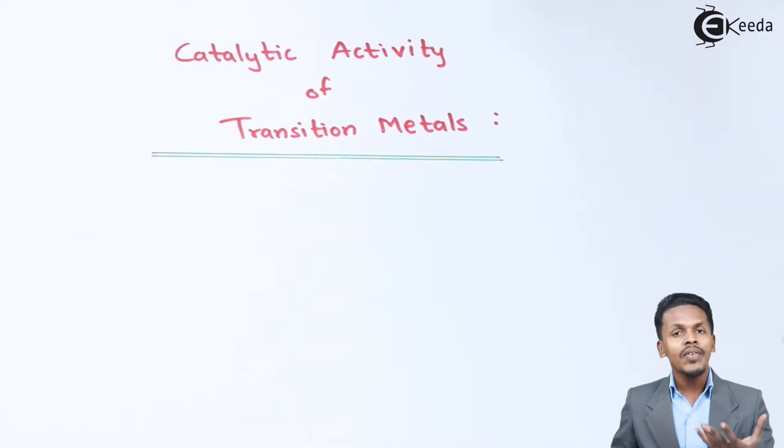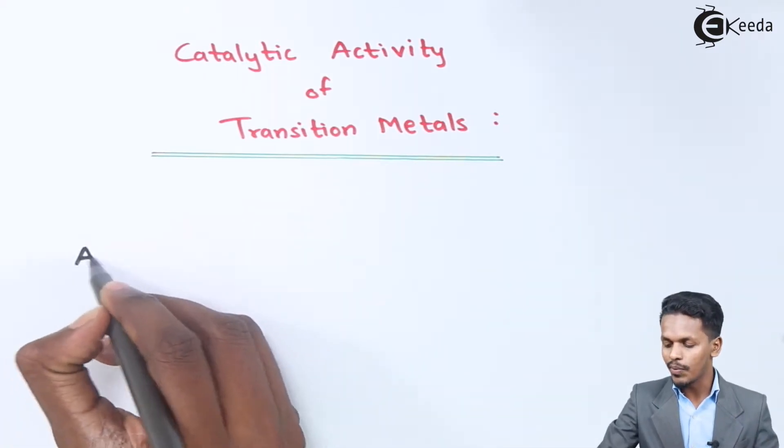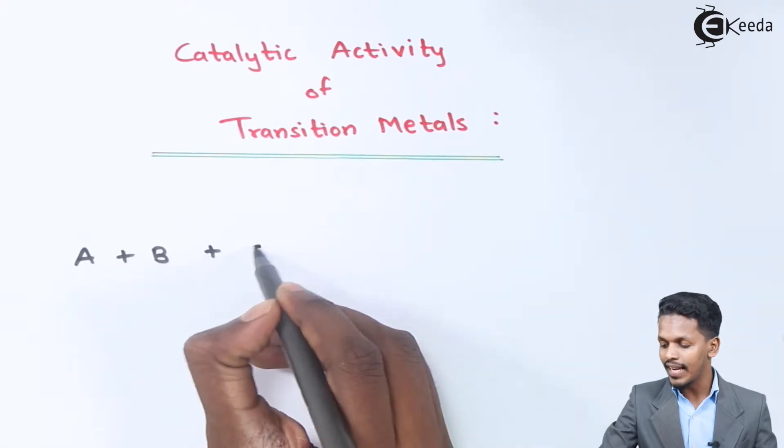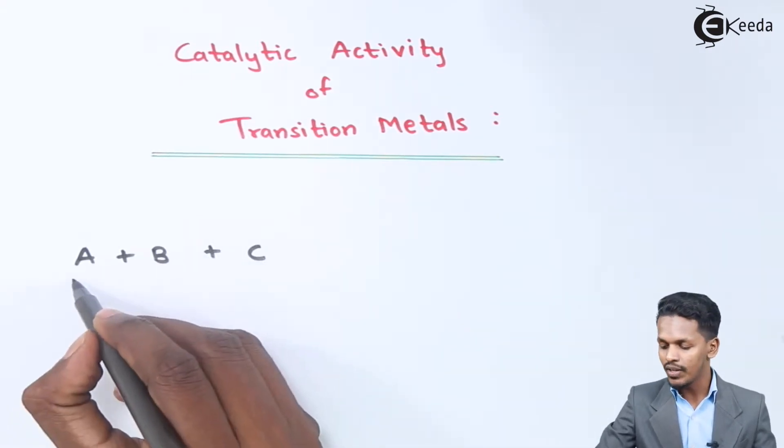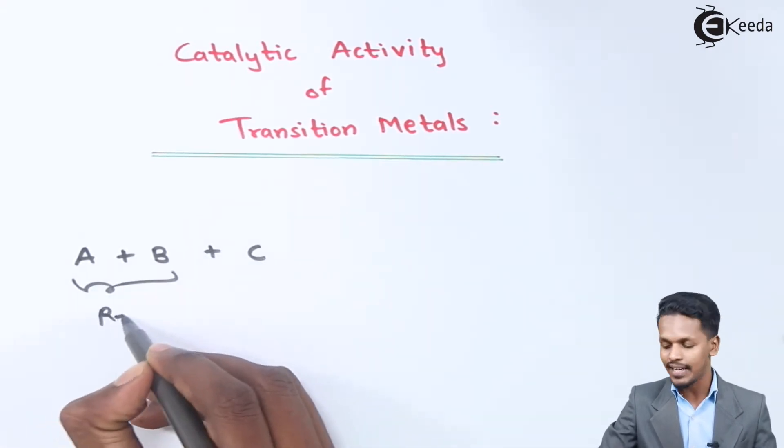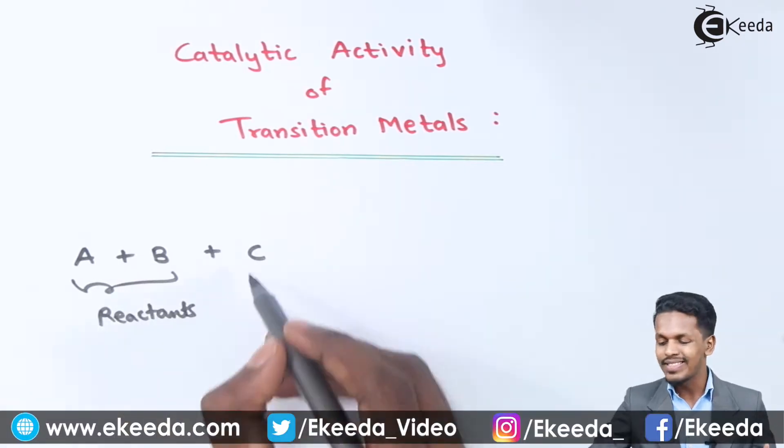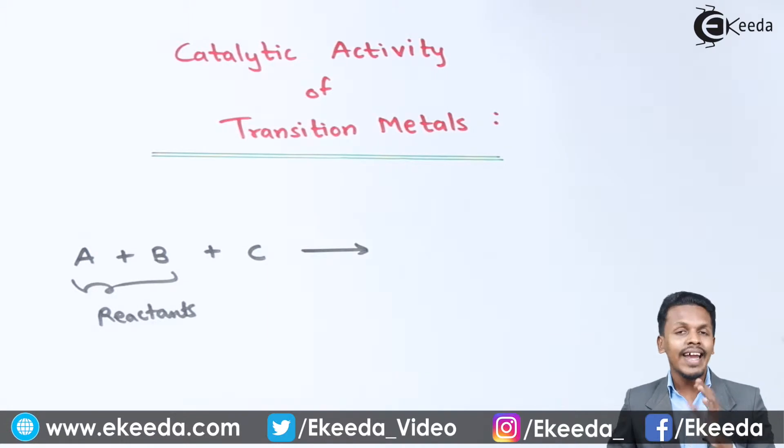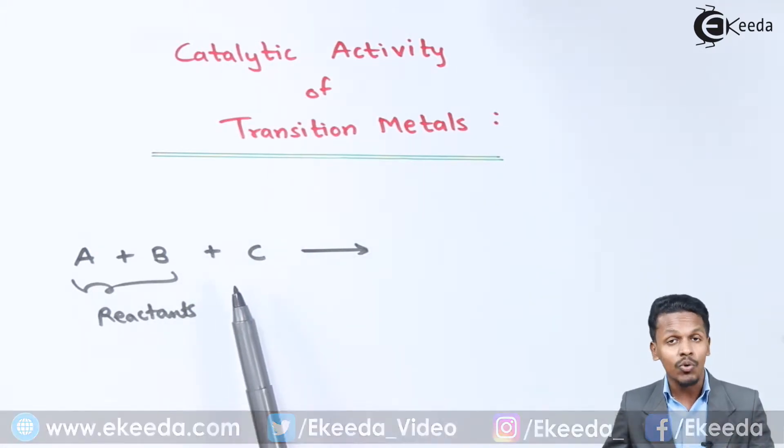For example, suppose we have reagents A plus B and we are involving a catalyst C. In this case, A and B are the reactants while C is the catalyst.